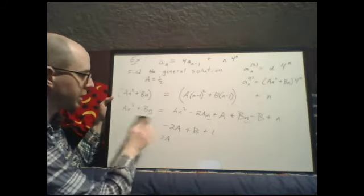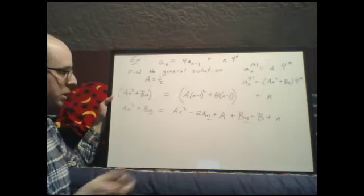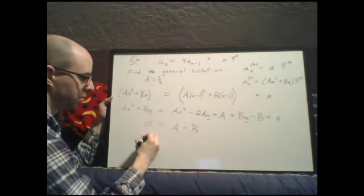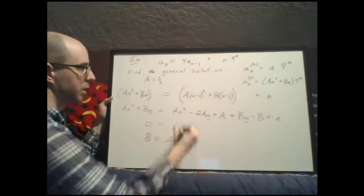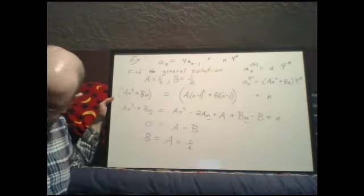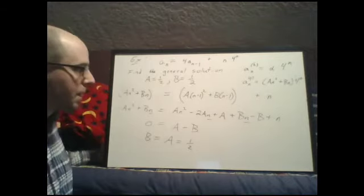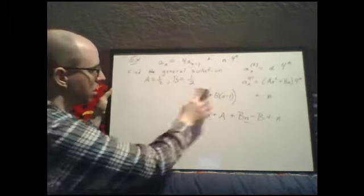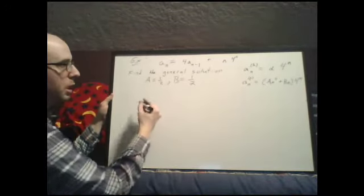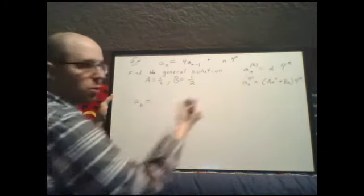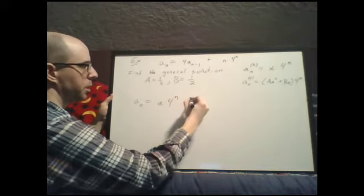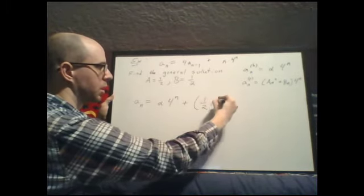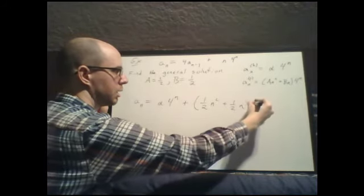Looking at the constant terms: 0 equals a minus b, so b equals a equals one half. Our general solution is a_n equals alpha times 4 to the n plus (one-half·n² plus one-half·n) times 4 to the n.